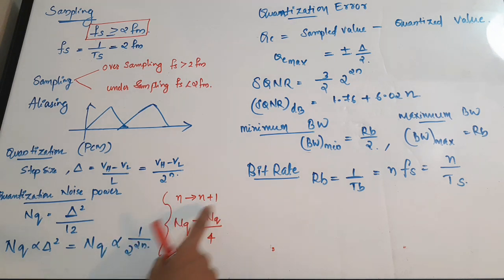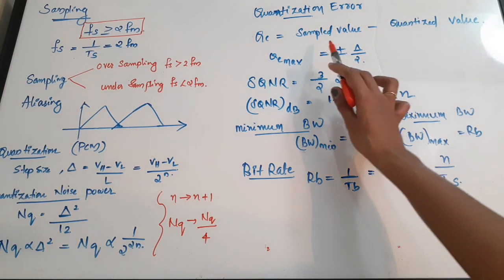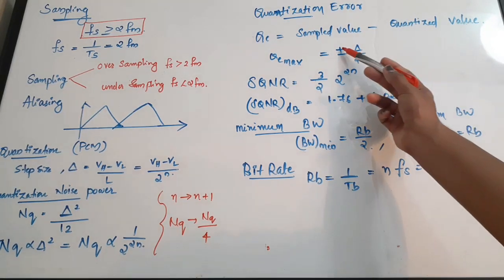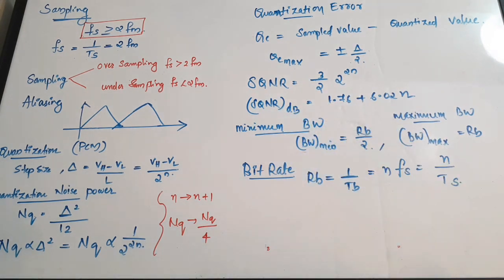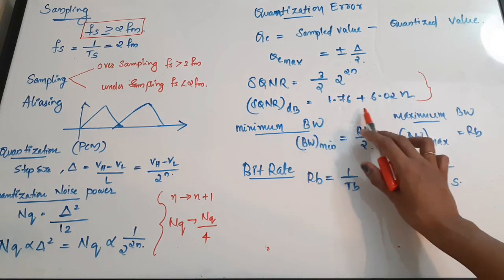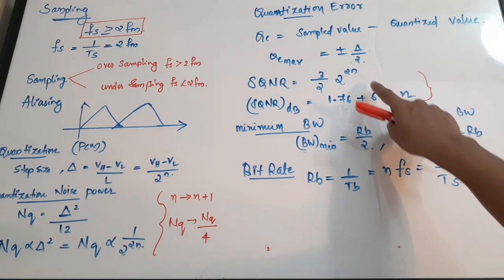When the number of bits increases from N to N+1, the quantization noise power reduces to NQ/4. The quantization error QE = sampled value − quantized value, and the maximum quantization error is ±delta/2. The signal-to-quantization noise ratio (SQNR) = (3/2) × 2^(2N). In dB, SQNR = 1.76 + 6.02N, where N is the number of bits.